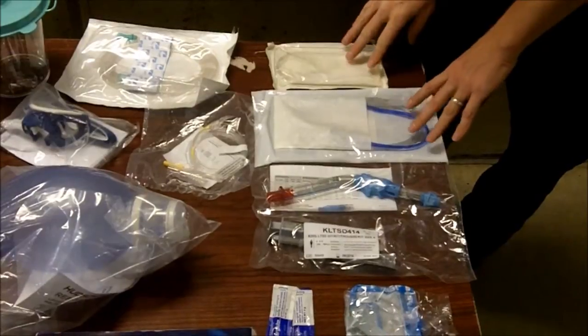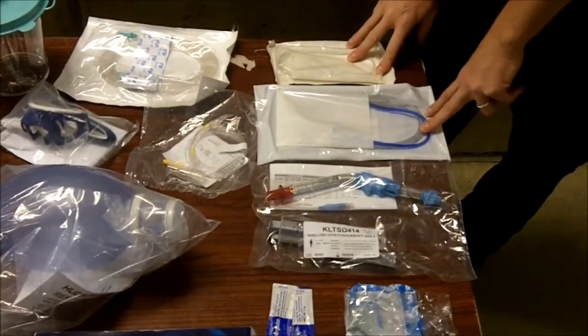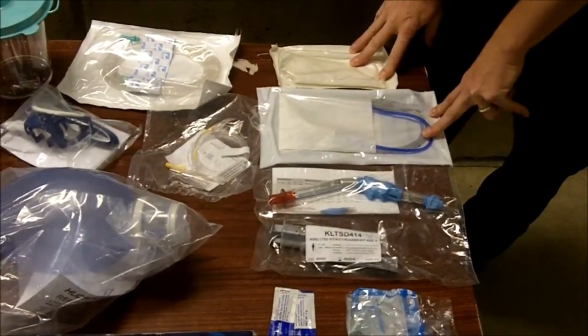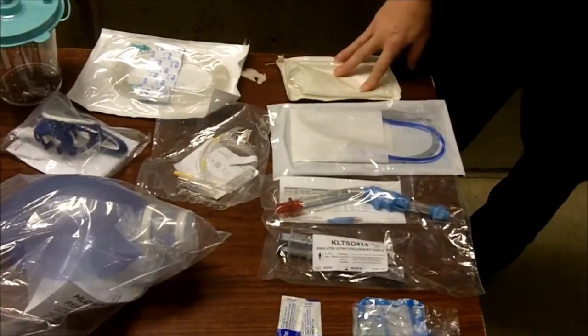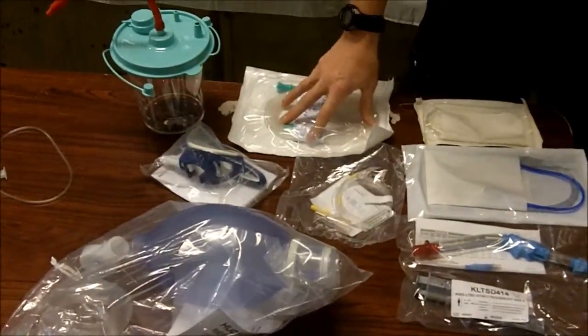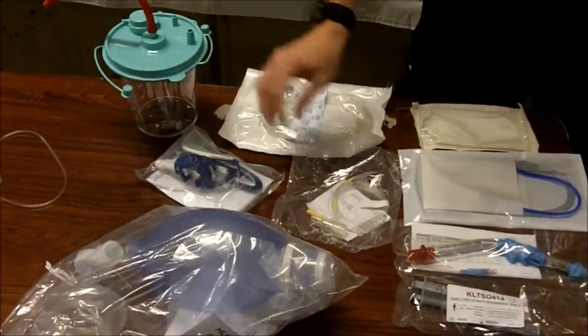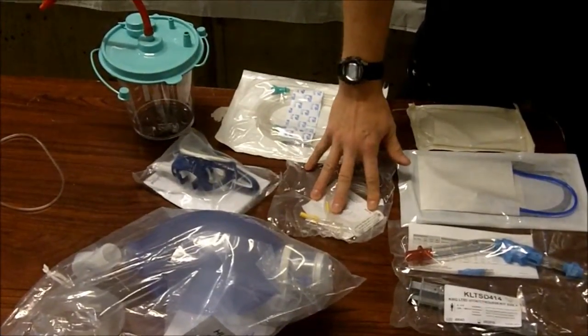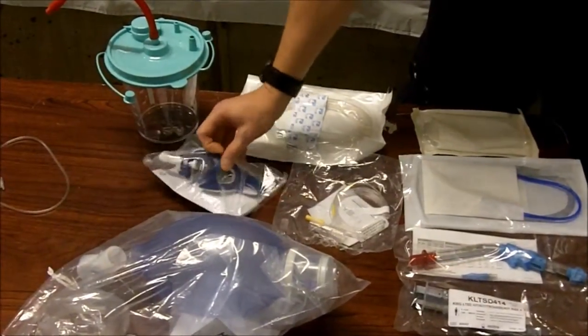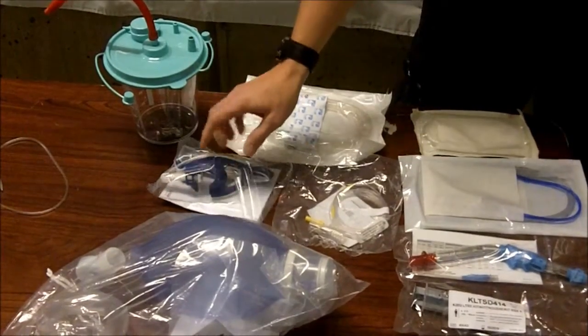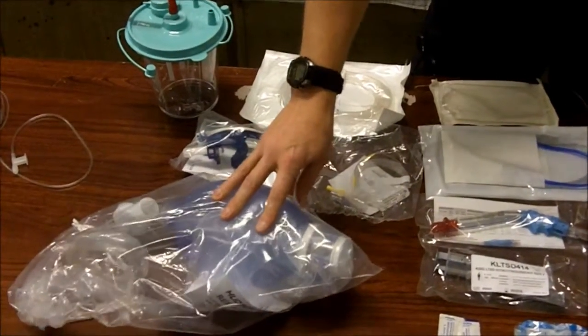Additionally, some of the advantages of the King airway: this is a Salem sump or an NG tube or OG tube, and this here is a French catheter, suction tubing, suction canister, end-tidal CO2 monitoring equipment, and our tube securing device. And of course you will all recognize the bag valve mask.